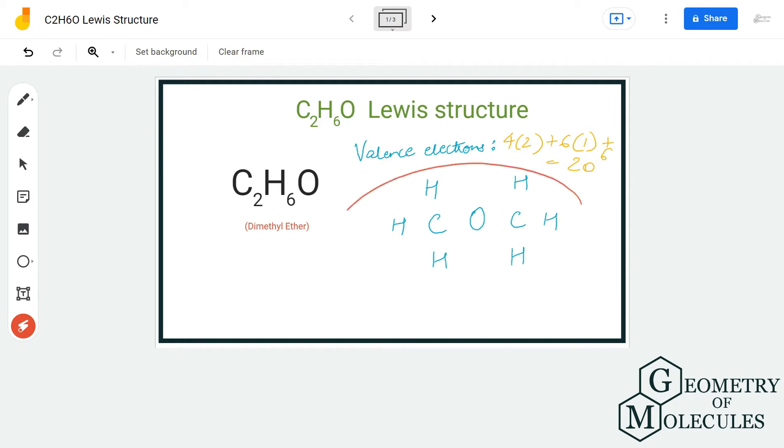Now if you know about functional groups and organic chemistry, you'll know that when there is an ether there is an arrangement like this, and that is the reason it is known as dimethyl ether. We place two methane groups and in between it comes the ether group.